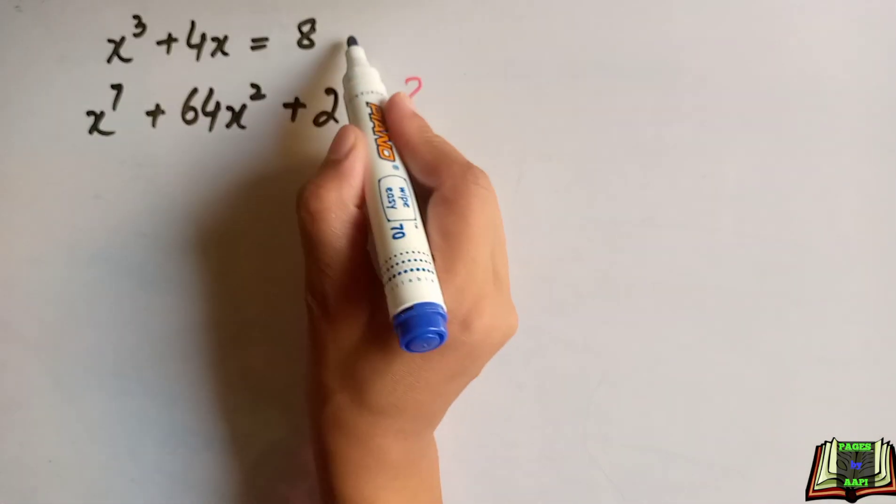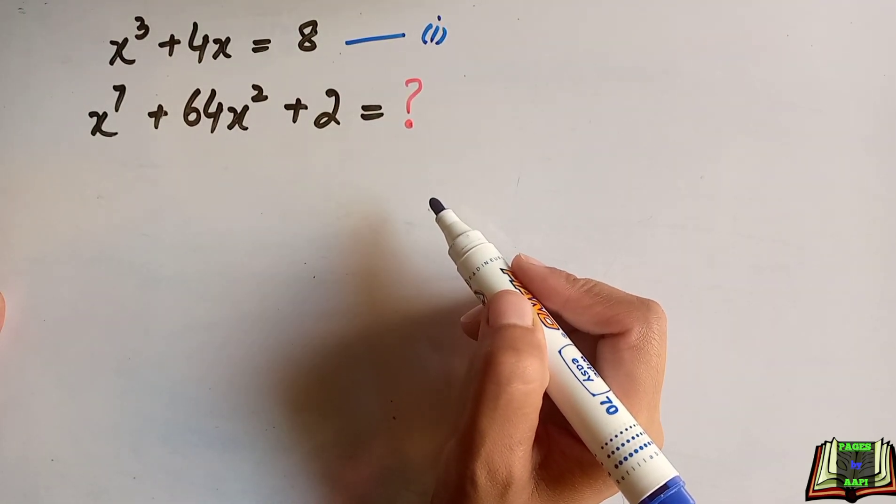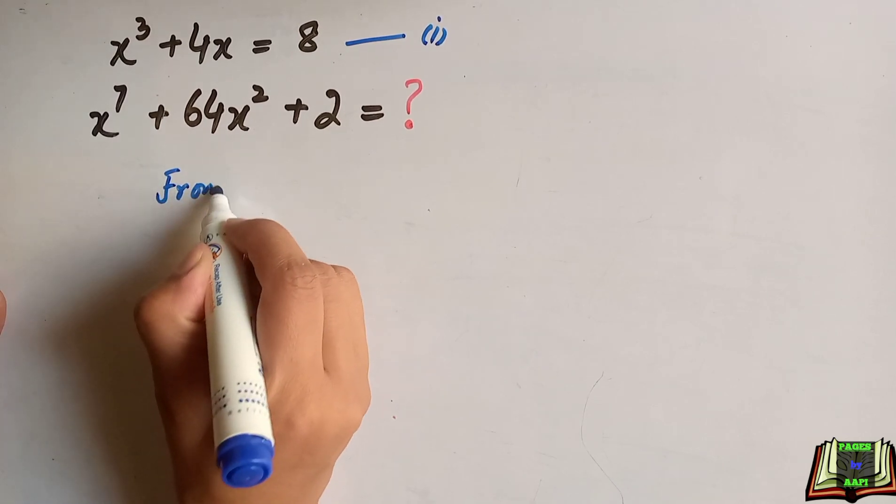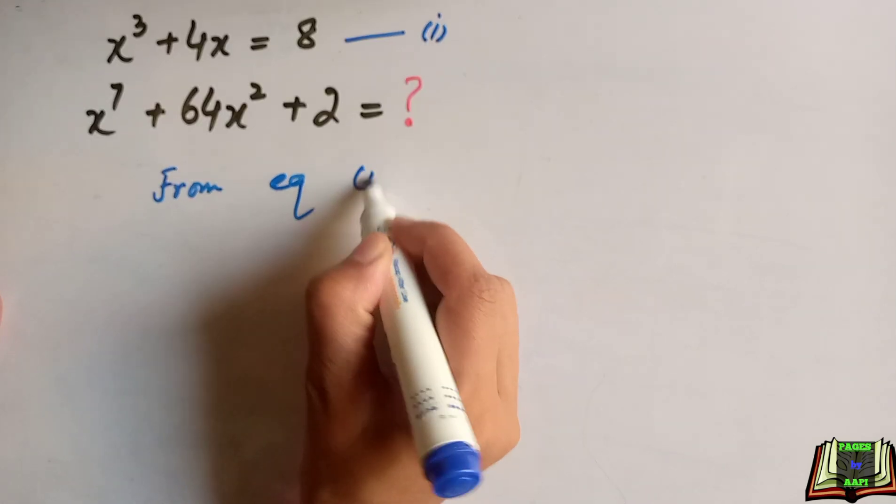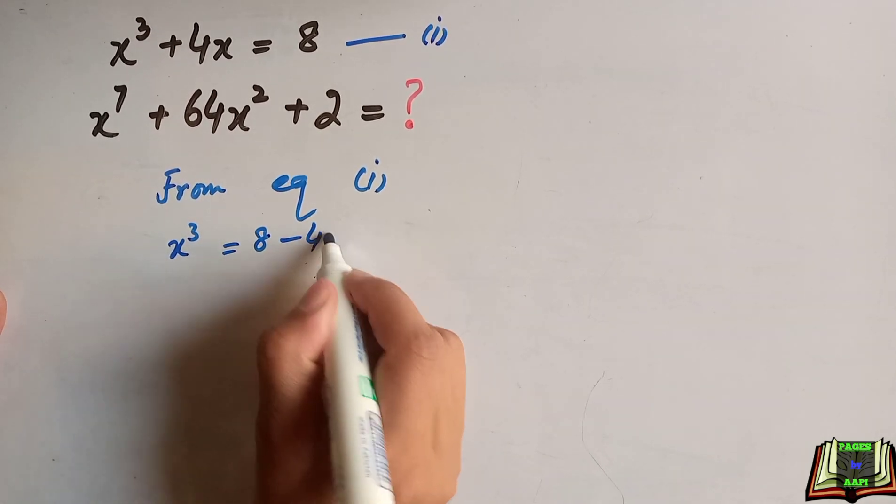We're going to use the substitution method here, but we'll do some manipulation first. Let's name this equation as equation 1. From equation 1, we can write x³ = 8 - 4x.